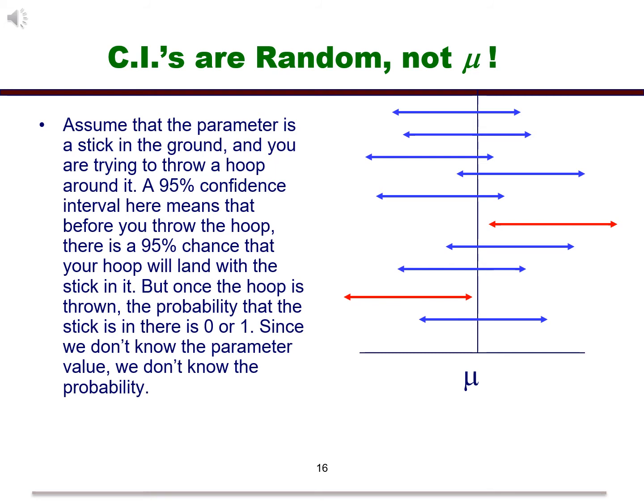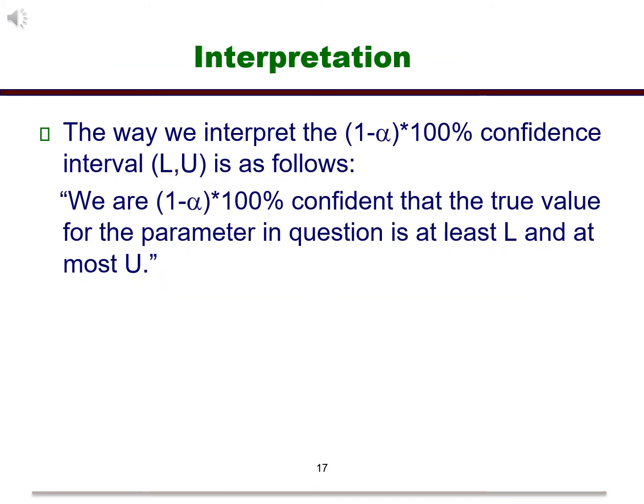Okay, so now how do we interpret this interval? Assume that capital U and capital L are the upper and lower confidence limits respectively. The interpretation now becomes we are 1 minus alpha times 100% confident that the true value for the parameter in question is at least L and at most U.